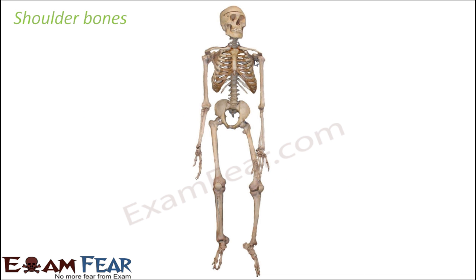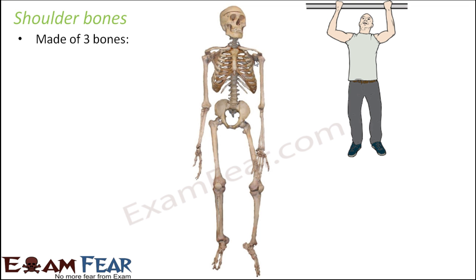The next type of bones that we would discuss are the shoulder bones. When it comes to shoulder bones, it is not a single bone present in the shoulder region, because a lot of flexibility is there in the shoulders. The shoulder part is made up of three bones, and these three bones together help us to move when we see movement of our shoulder.